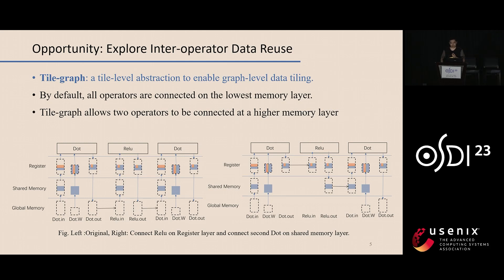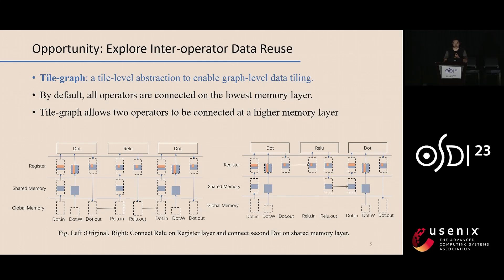In order to leverage both intra- and inter-operator memory optimization opportunities, we reconsider the multilevel tiling abstraction at graph scope and propose the TileGraph abstraction. In multilevel tiling, all intermediate results are exchanged on the lowest memory layer. But in TileGraph, it is allowed to connect two operators at a higher memory layer. When connected at a higher memory layer, intermediate results won't be written to global memory. For example, we can connect the ReLU on the register layer and then connect the second dot product on the shared memory layer.